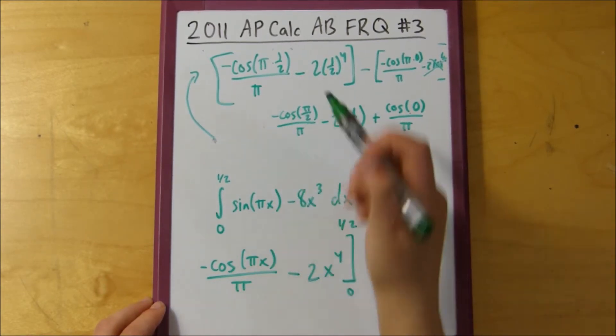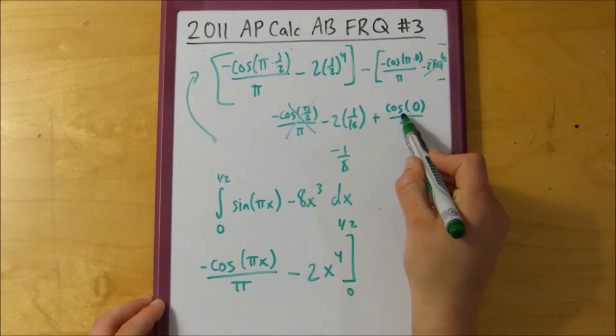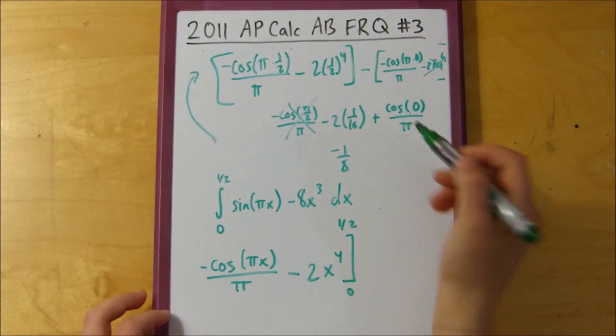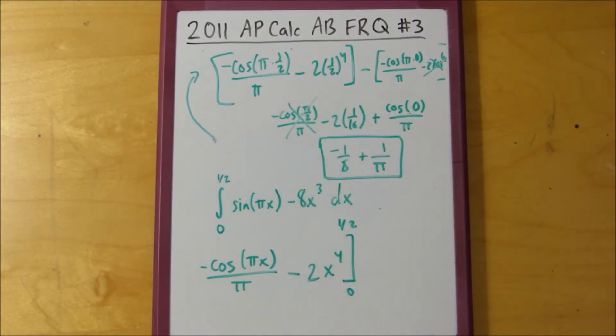Cosine of pi over 2 is 0. If you think of your unit circle, it's 0, so this entire thing goes away. So we have negative 2 times 1/16th, that's negative 1/8th, and then cosine of 0, like I said before, is 1, and it's plus 1 over pi, and this is our final area of R. So there's a bunch of little steps along the way when you integrate that. You should take it slowly to make sure you don't mess up because these are pretty simple problems. Just take it slowly.